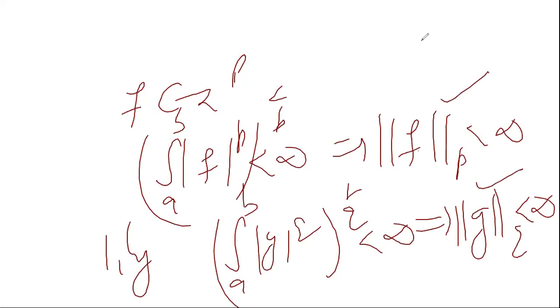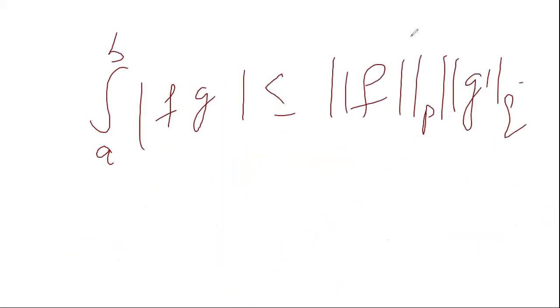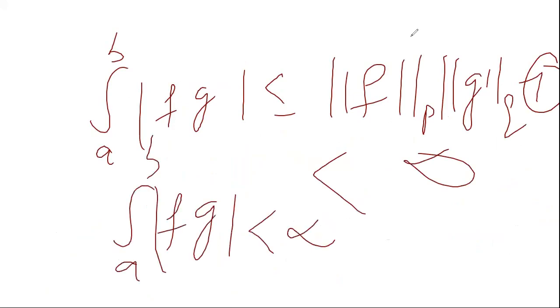Let me write this in full detail. Why will this happen? Because F is in Lp, G is in Lq. This means their integration will be less than infinity. So both these quantities will be less than infinity. And what have we proved? Integration A to B FG mod is less than or equal to norm of Fp into norm of Gq. Label this number one. This is less than infinity. Therefore, integration A to B mod of FG is less than infinity.